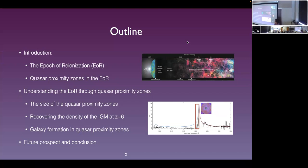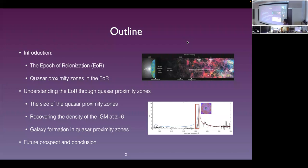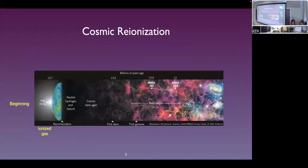I'll start with an introduction to cosmic reionization and quasar proximity zones — what they are — and by the way, as a spoiler, this is one real data example of a proximity zone in a quasar spectrum. I'll then discuss three topics: first, how to interpret the size of the proximity zone; second, how we can use it to probe the IGM in the distant universe; and in the last part I'll switch gears to talk about how galaxy formation is impacted in the proximity zone under intense quasar radiation. I'll end with a future outlook.